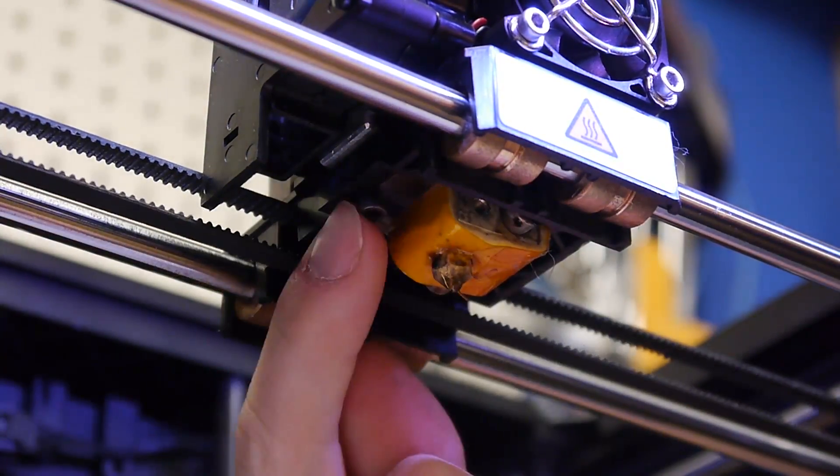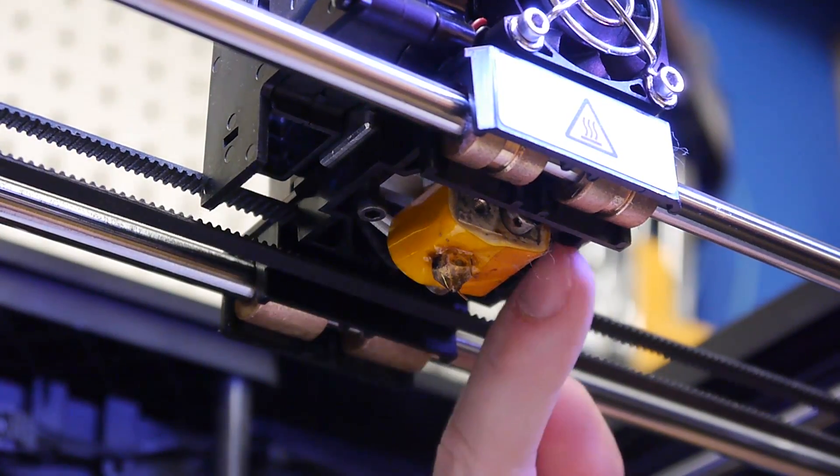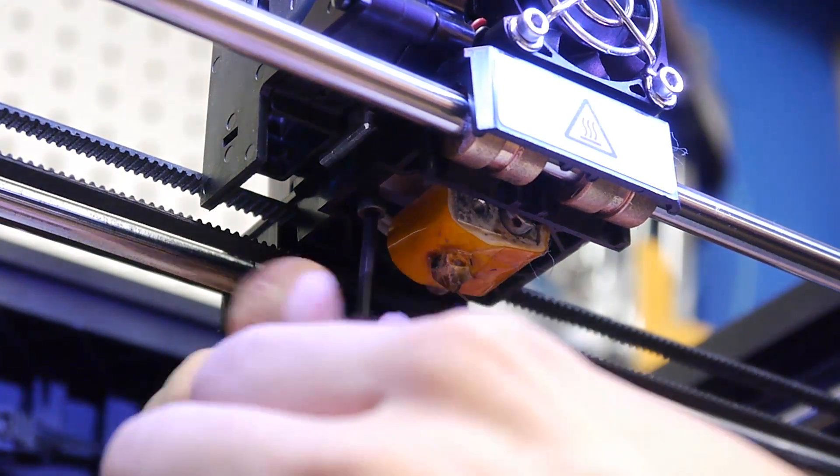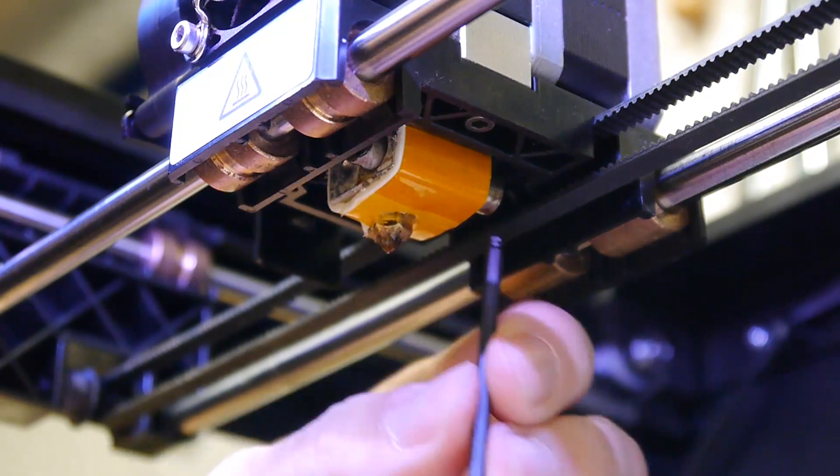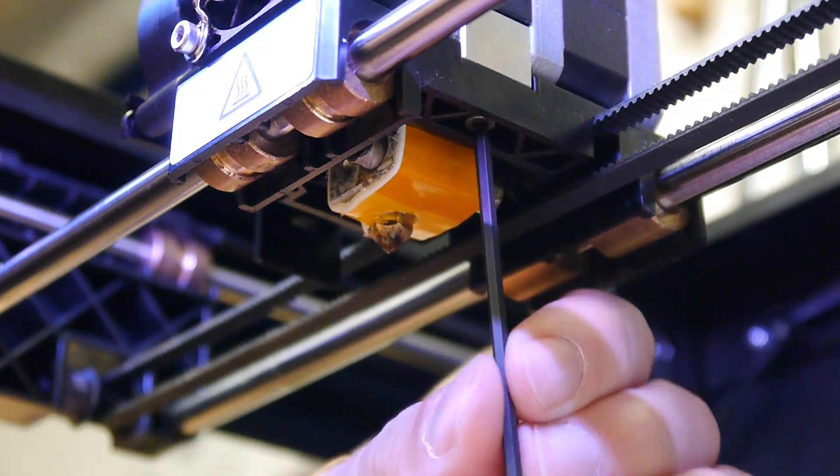We're going to take out these two hex bolts in here. What this does is this actually holds the entire assembly onto the gantry system.